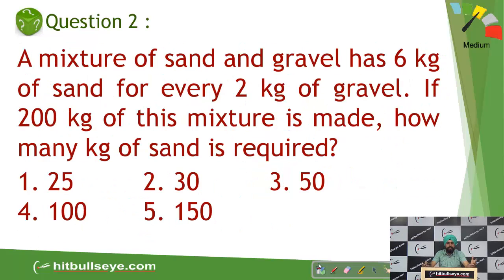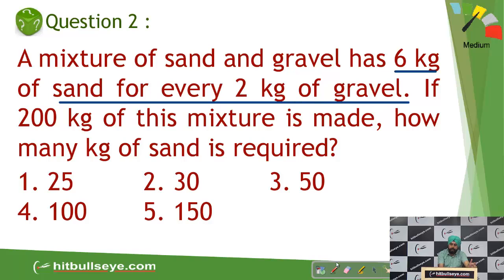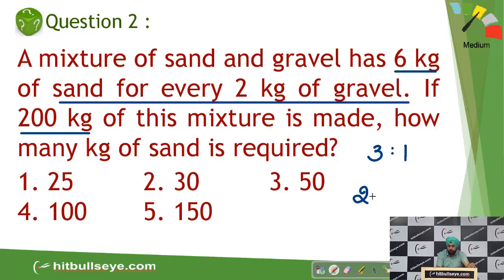Moving on to the next question — it's a very simple one. It says two kilograms of sand for every two kilograms of gravel, so the ratio is three is to one with a total of 200 kilograms. Sand is three-fourths of the total, so 200 multiplied by three-fourths gives 150, which becomes your answer.